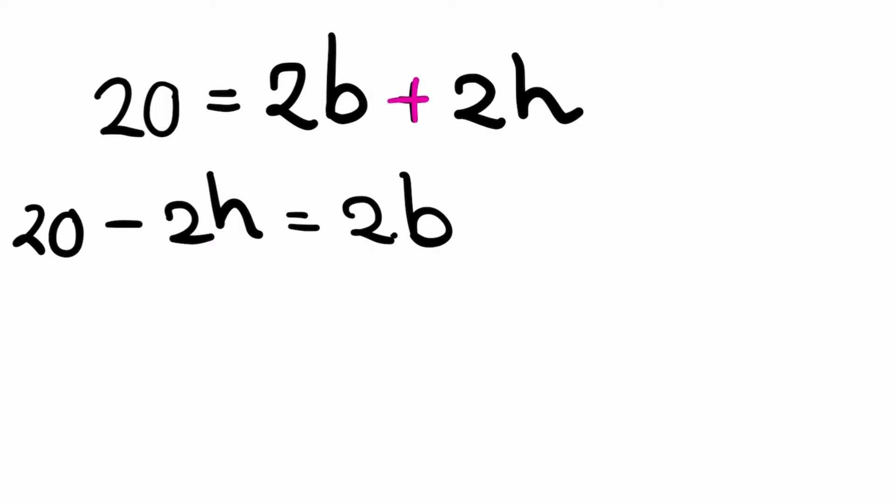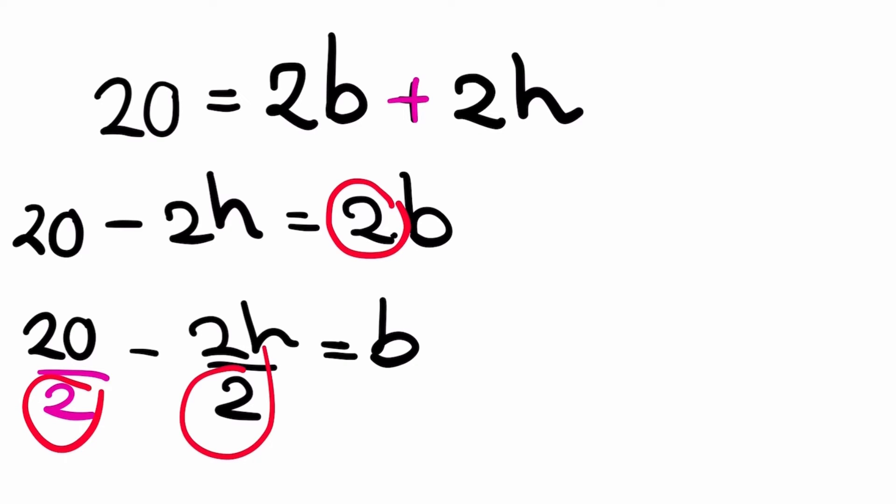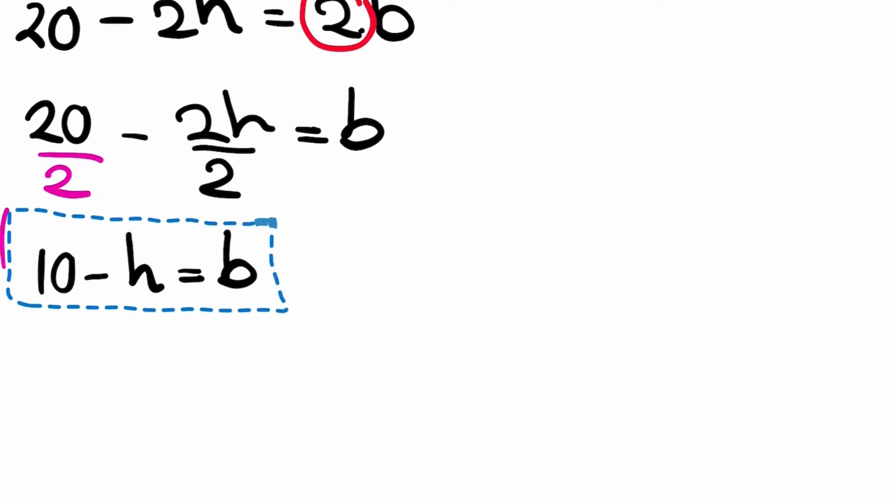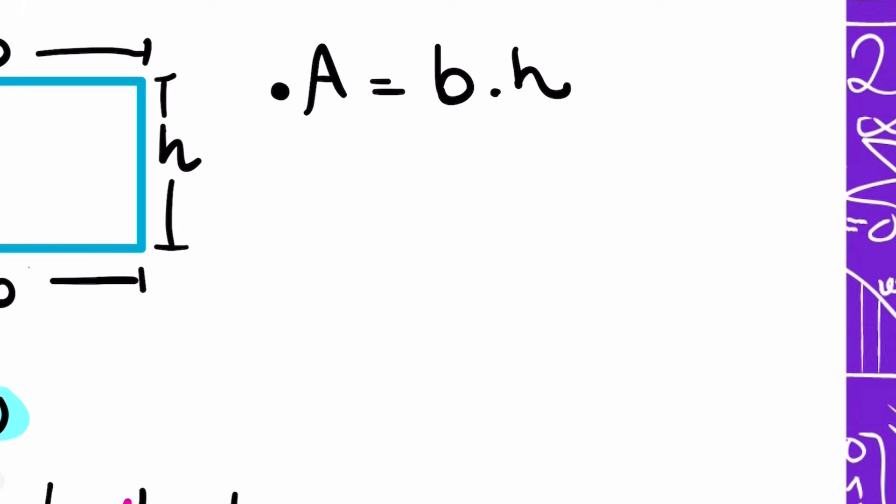20 minus 2h equals 2b. And now, I know that this 2 is multiplying, so I can pass it to the other side of the equation as a divide. 20 divided by 2 minus 2h divided by 2. This equals b. 20 divided by 2 gives me 10. Minus 2 divided by 2, that is 1h, or only h. This equals b. Now I have important information. I know that b is 10 minus h. B equals 10 minus h, and h is h.